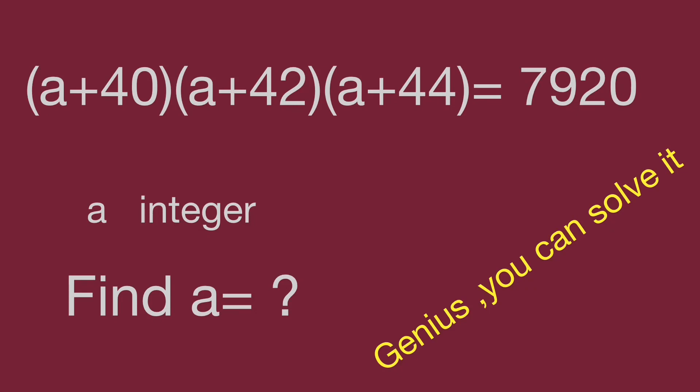The question is quantity a plus 40, multiply quantity a plus 42, multiply quantity a plus 44, equal to 7920. Find the value of a.